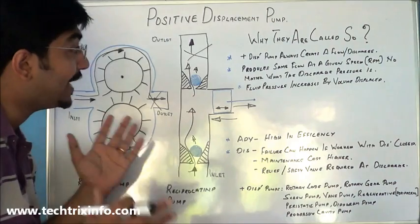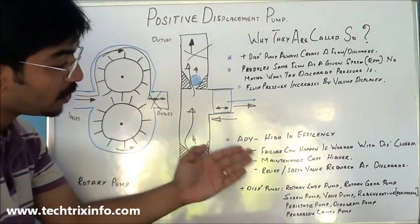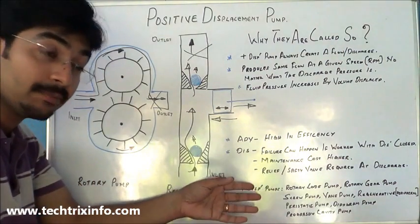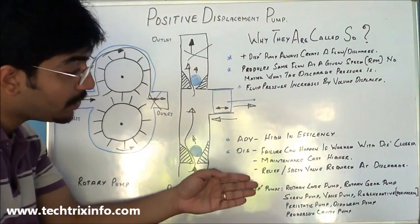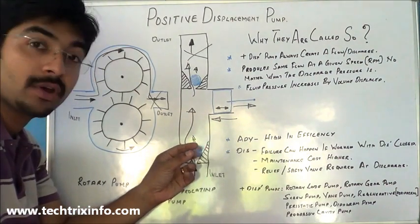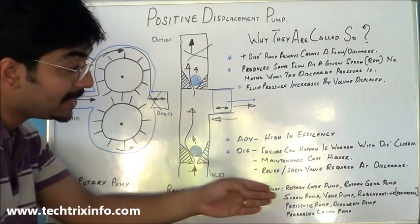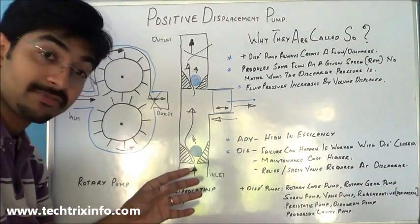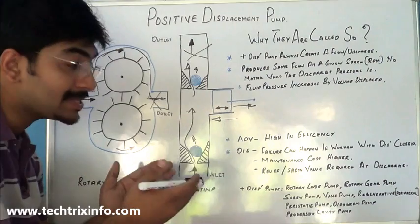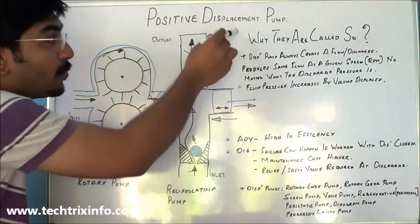Some examples of positive displacement pumps are: rotary lobe pump, rotary gear pump, screw pump, vane pump, regenerative or peripheral type pump, peristaltic pump, diaphragm pump, and progressive cavity pumps.